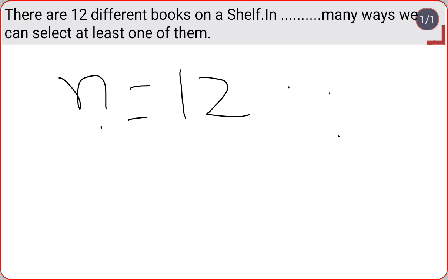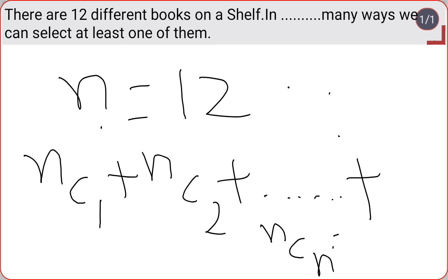to solve this problem we have one shortcut. The shortcut is nC1 + nC2 + ... + nCn = 2^n - 1. So this is my shortcut formula.